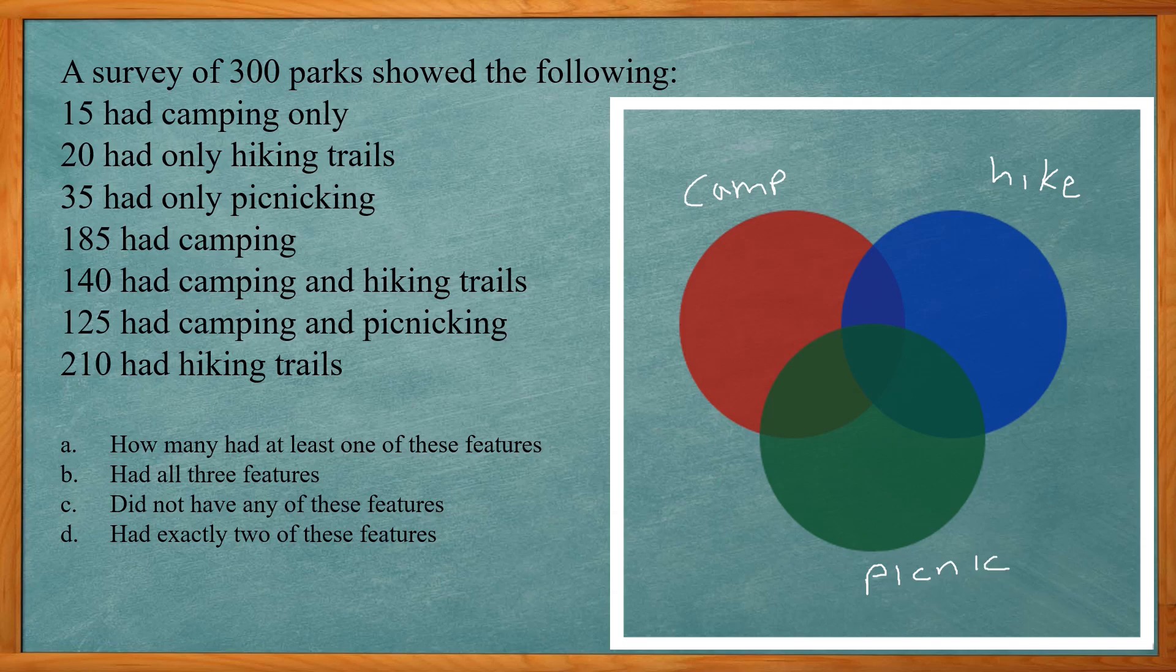Alright so what makes this one difficult is they don't give you how many did all three. So you have to use some reasoning to figure out how many used all three. Usually you work from the middle but here you have to work with what they give us. So we start with 15 had camping only so they give us 15 here camping only.